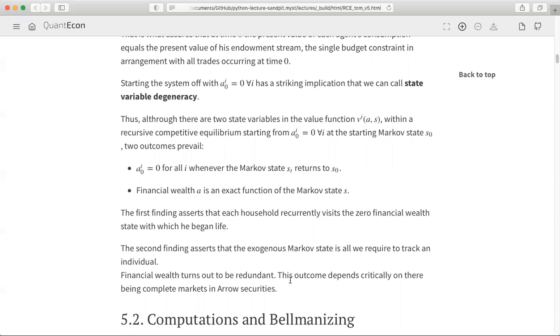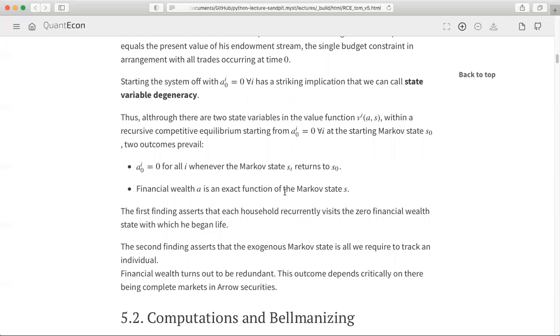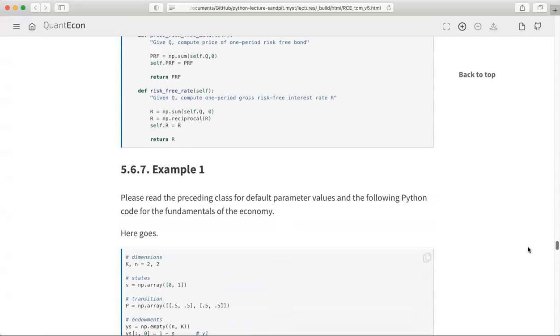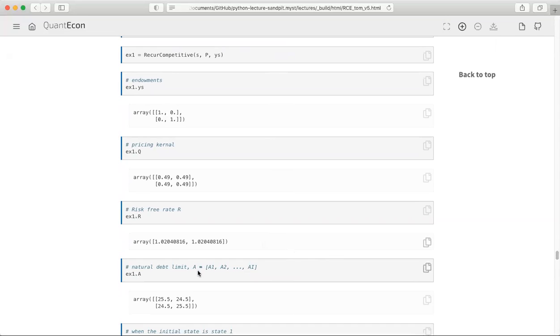That outcome depends critically on there being complete markets and Arrow securities. In other models that we study in macro, starting with Friedman and Hall's linear quadratic permanent income model, there aren't complete markets and Arrow securities, and financial wealth is not redundant. It's a key state variable. These principles that I'm talking about here show up in the examples that we did when we calculated these things using our Python code. That kind of wraps it up for now about this Markov meets Arrow.